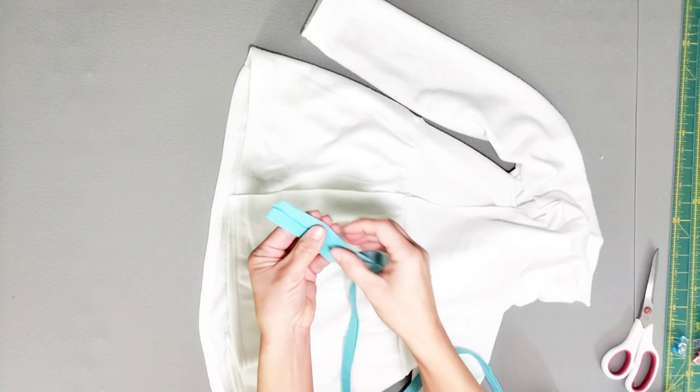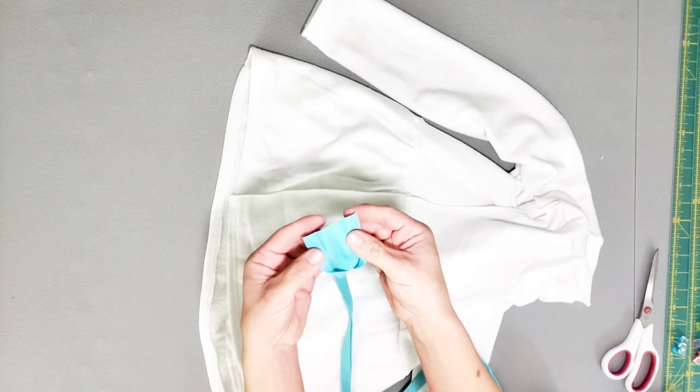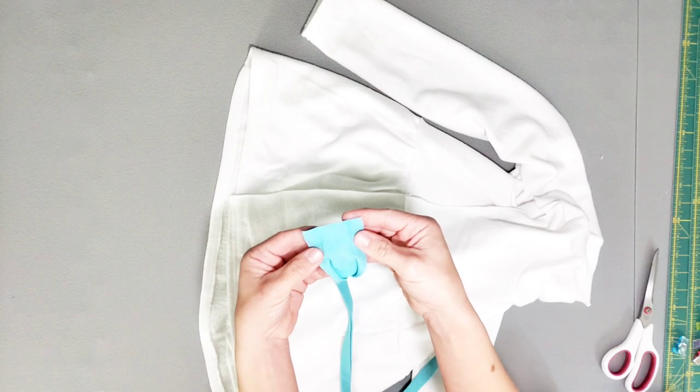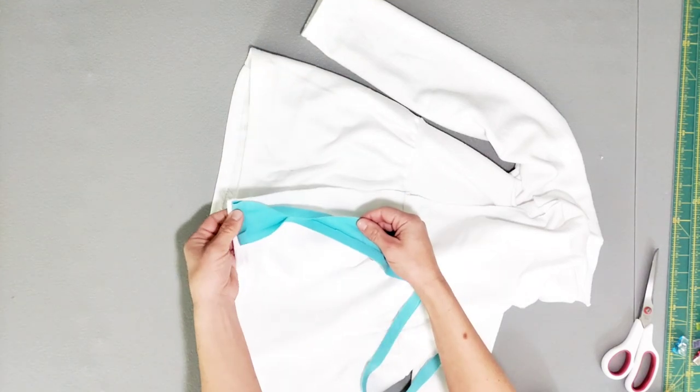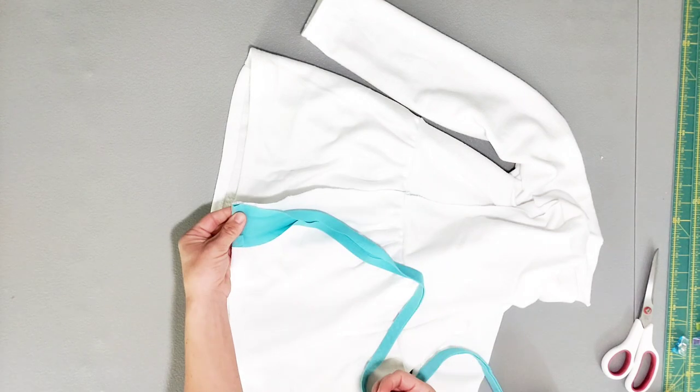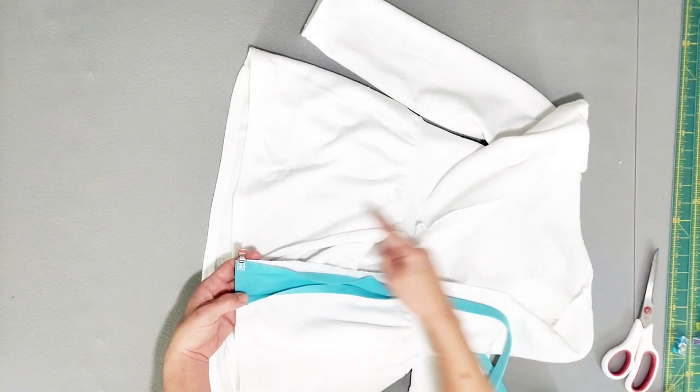Open up your bias tape. Fold the short edge to the wrong side by about half an inch. And clip this folded edge to the right side of the bottom of your garment, right sides facing. Continue clipping all around the entire front of your garment.